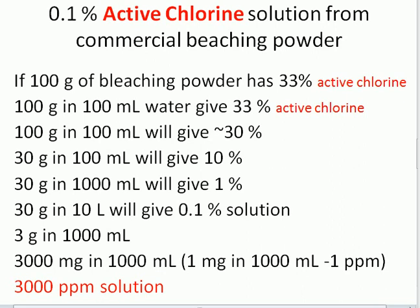This means 30 grams in 100 ml of water will give us a 10 percent active chlorine solution. If you want to decrease the concentration, we can increase the amount of water or decrease the amount of solid commercial bleaching powder for the dilution. So if we put 30 grams in 1000 ml, that is 1 liter of water, it will give us a 1 percent active chlorine solution. This means in 10 liters it will give us a 0.1 percent active chlorine solution.